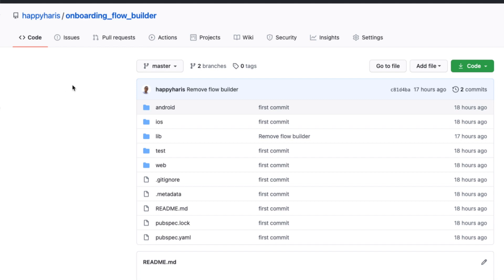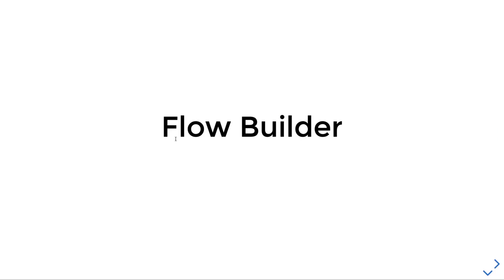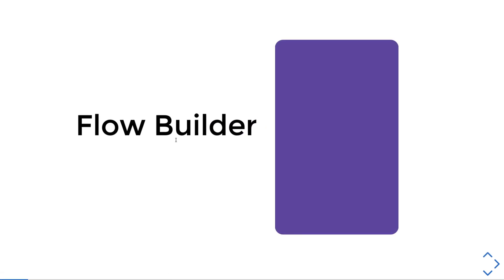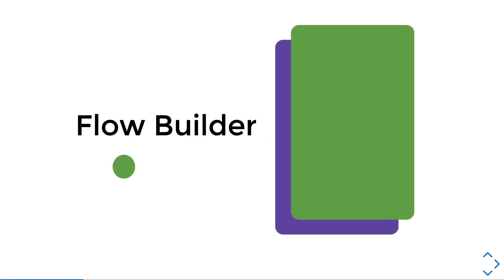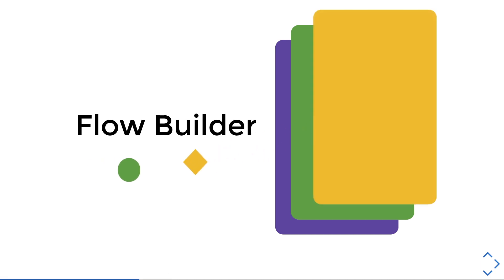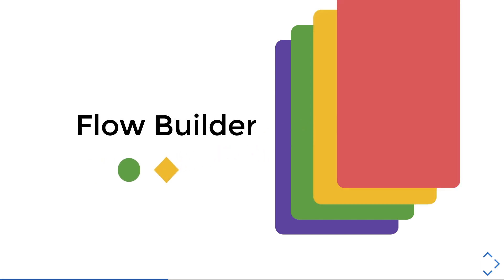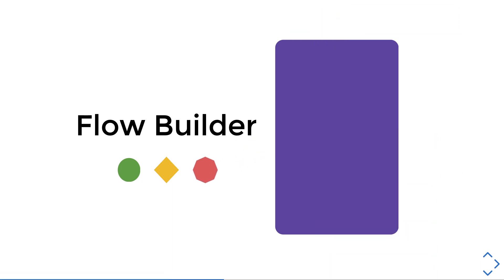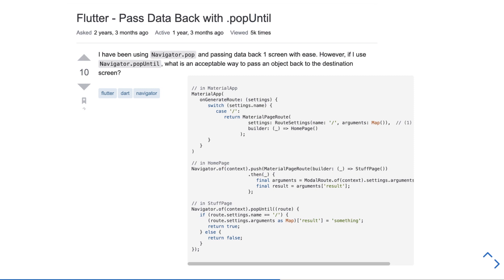To get started, you can go to the link in the description and fork this onboarding Flow Builder project. Once you have the project or the grocery app project, let's get started. Flow Builder helps us get the different data from each page that we have to push on top of our page stack. You could say that the Flow Builder is like a store. Once we reach the end of the page flow, we want to pop all of the pages except for the first one, like our homepage.